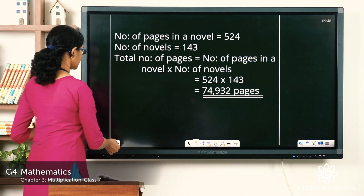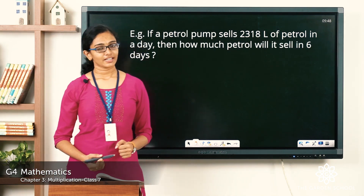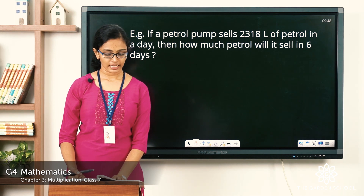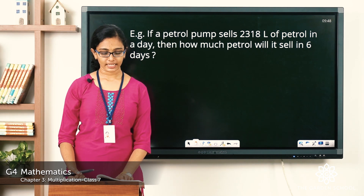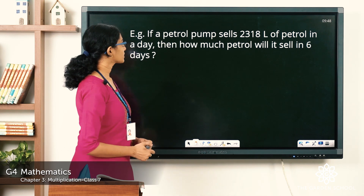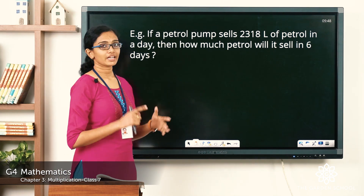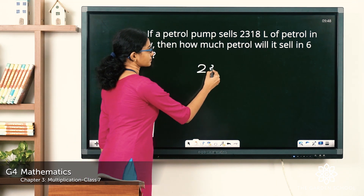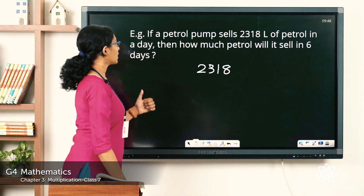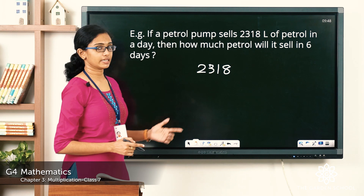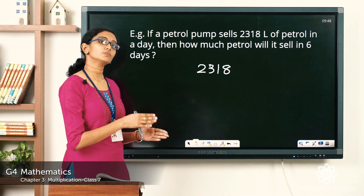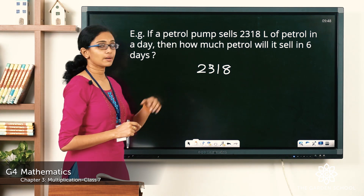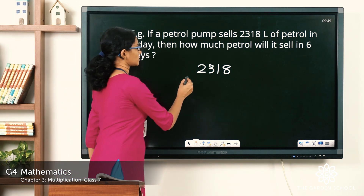Now let us see one more question. If a petrol pump sells 2,318 liters of petrol in a day, how much petrol will it sell in 6 days? What is given: the petrol pump sells 2,318 liters in one day, and you are asked to find out how much petrol it will sell in 6 days. That would be equal to the quantity of petrol sold in one day multiplied by the number of days, which is × 6.